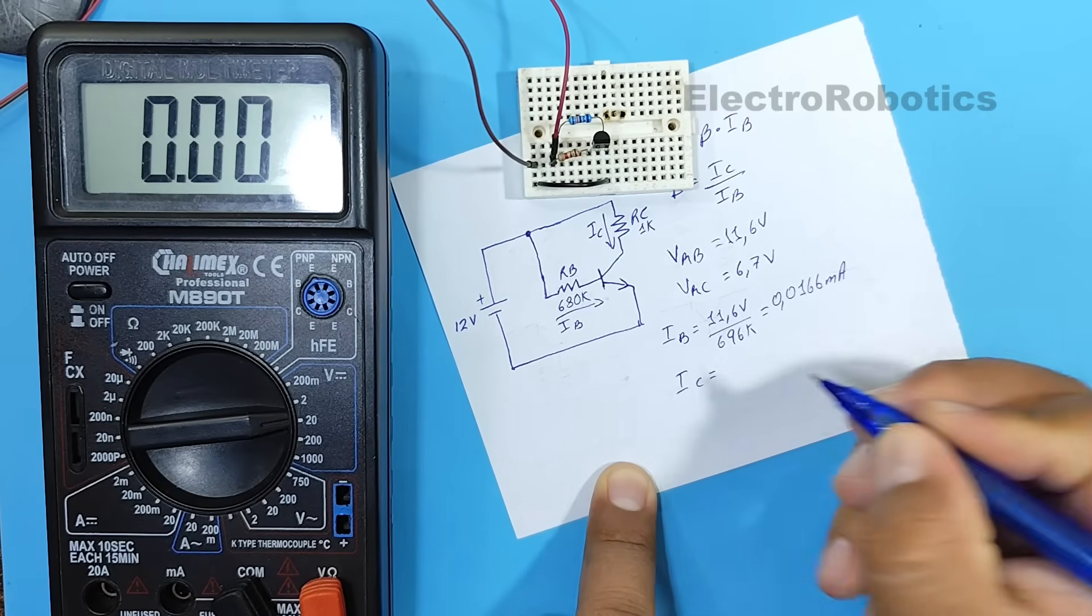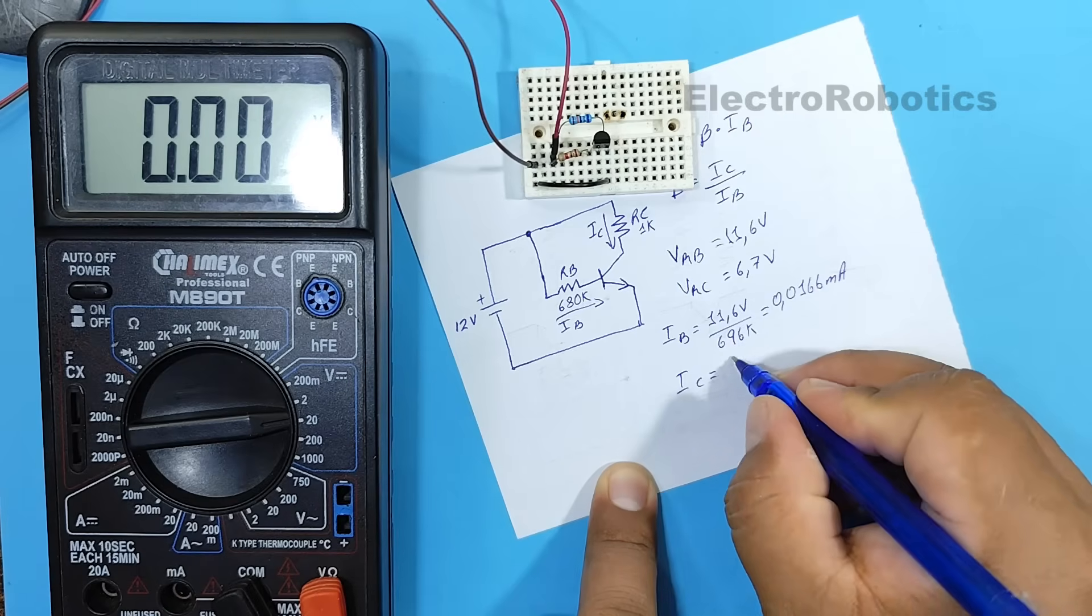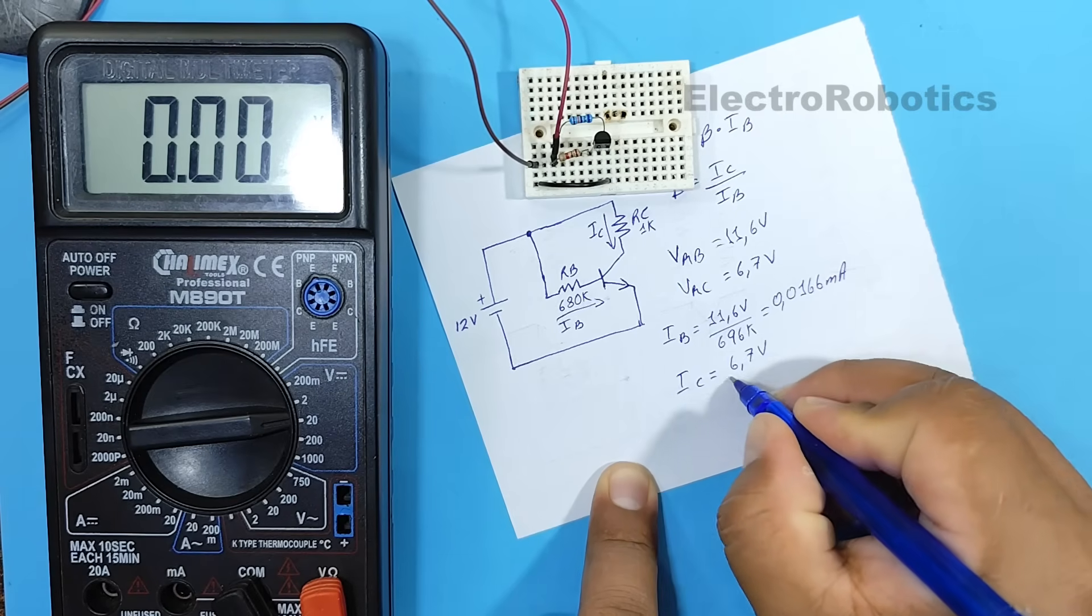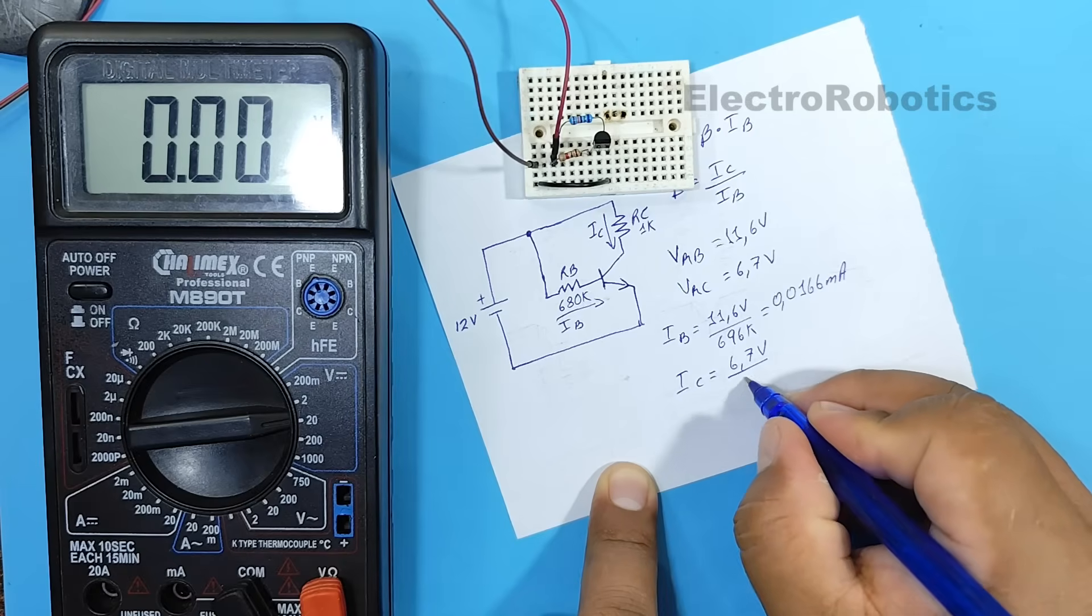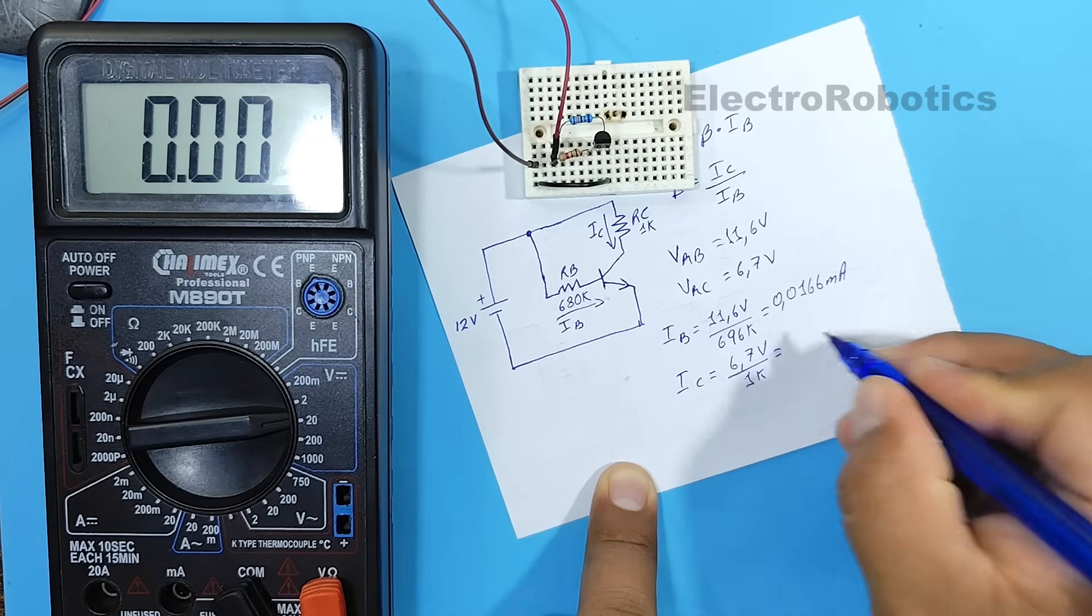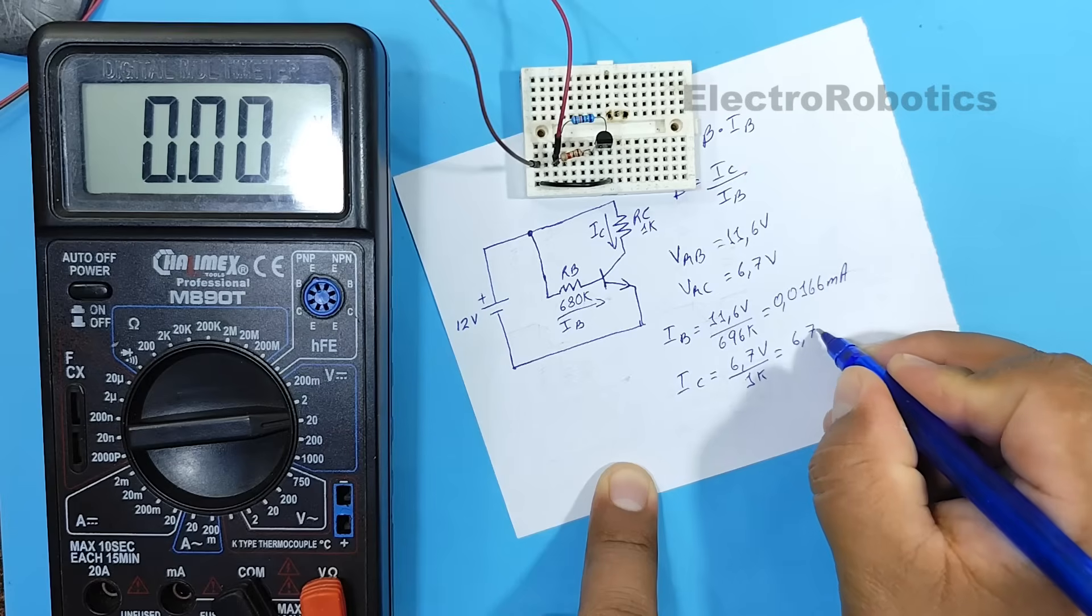The collector current would be equal to 6.7 volts divided by 1 kiloohm. This would be equal to 6.7 milliamps.